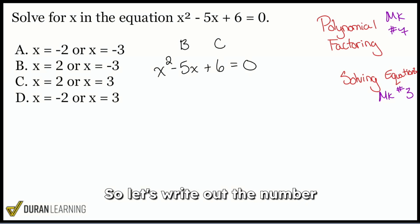So let's write out the number for C, which is six. What are the factors of six? Well, we can do 1 times 6. We can do 2 times 3. Those are the two ways that we can get six.